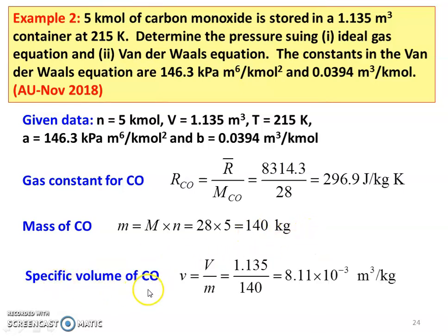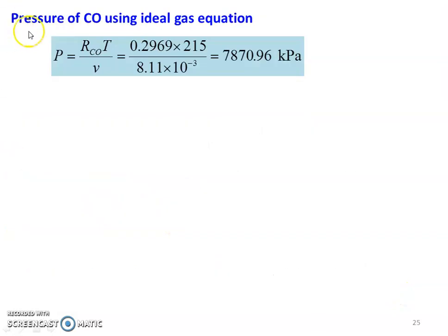Specific volume of CO: small v = capital V divided by mass = 1.135 divided by 140 = 8.11 × 10⁻³ m³ per kilogram. Now, pressure of CO using the ideal gas equation: P = R_CO × T divided by specific volume = 0.2969 × 215 divided by 8.11 × 10⁻³. Substituting R in kilojoules, the result is 7870.9 kPa.